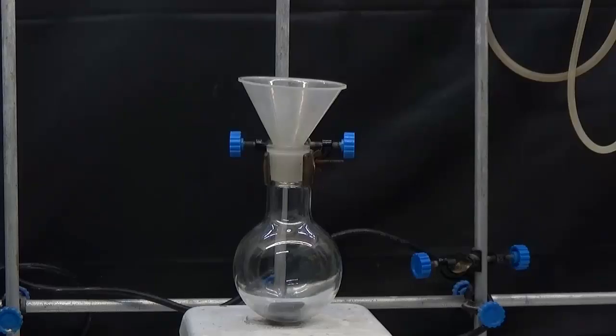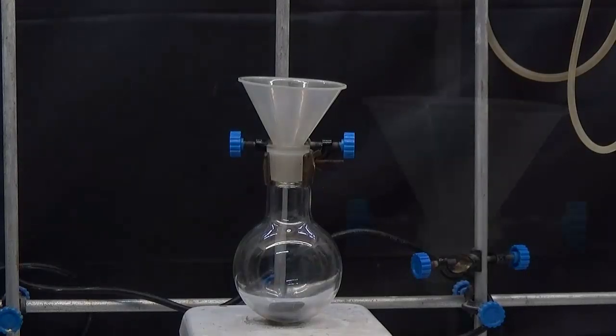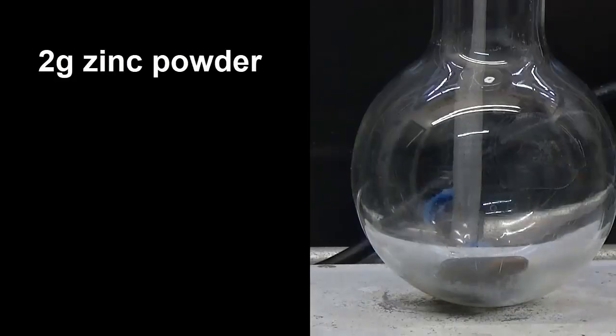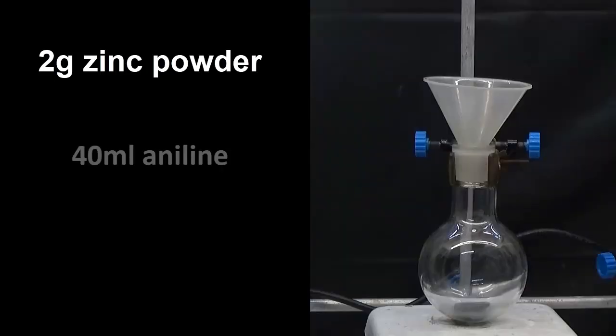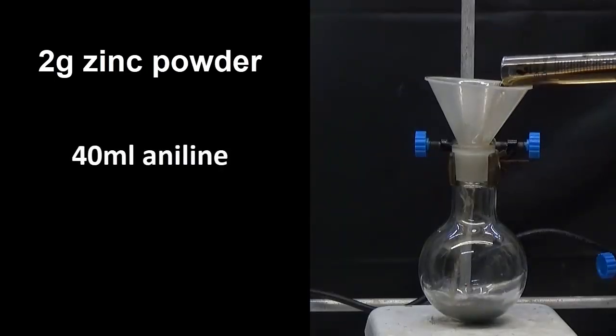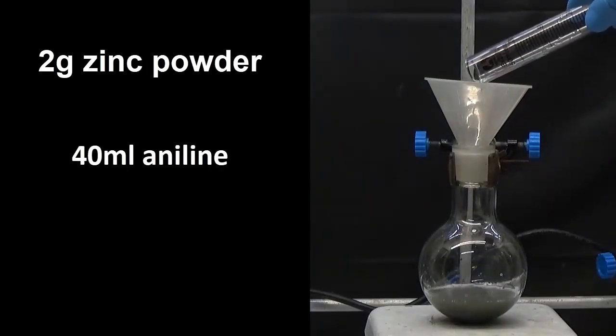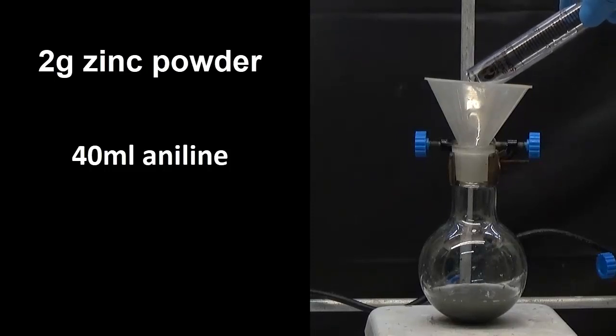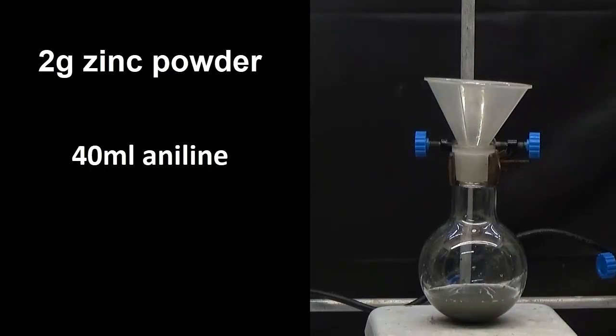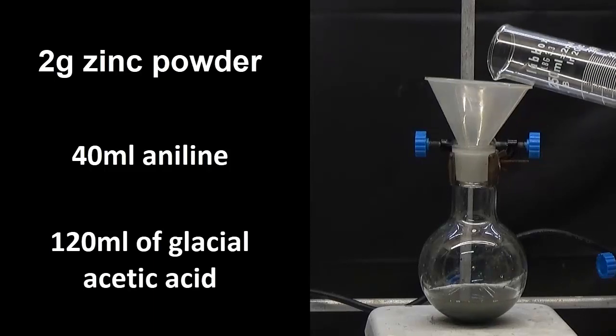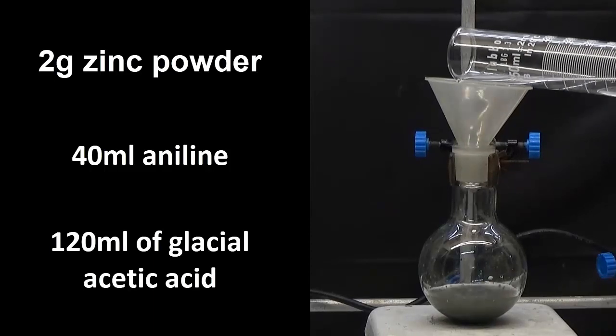We will put in a 250 milliliter flask 2 grams of zinc powder, 40 milliliters of aniline, and 120 milliliters of glacial acetic acid.